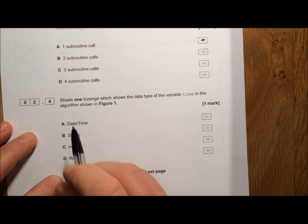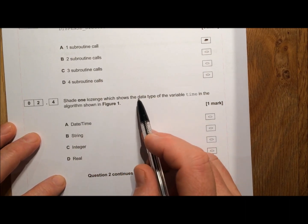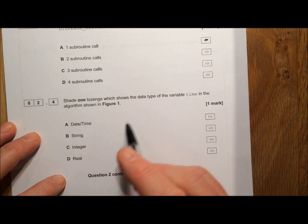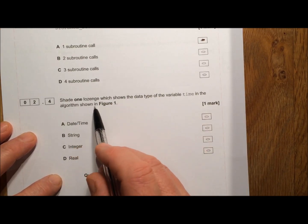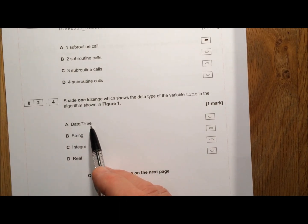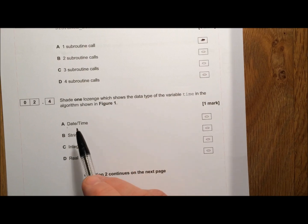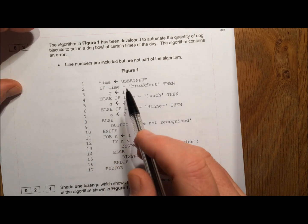Next question. Shade one lozenge which shows the data type, the kind of data that is put into the variable time in the algorithm shown in Figure 1. Now it would be very tempting to write date and time because it's got the word time in it. Let's go back and look at what kind of data gets put into the variable time.